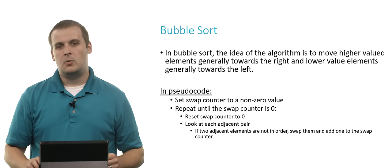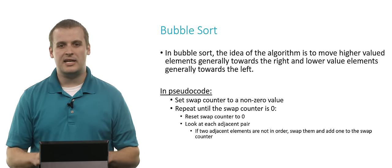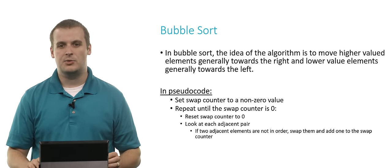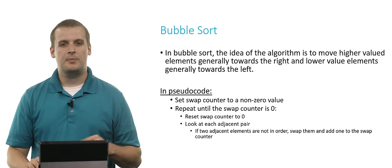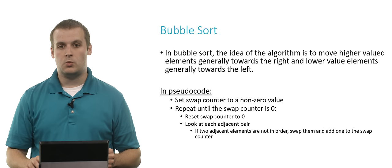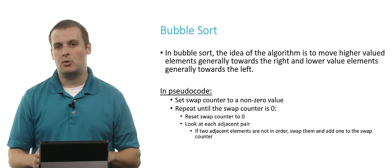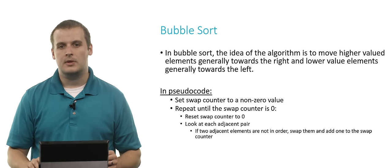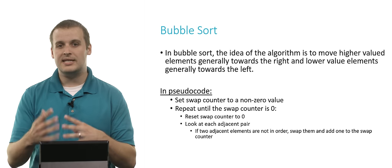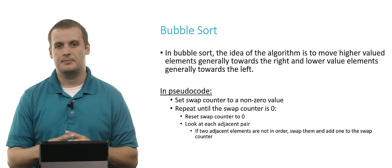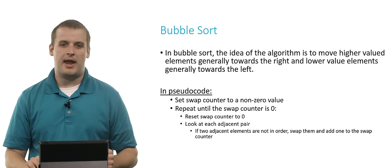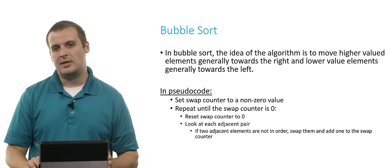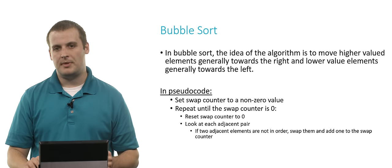How do we do this? Well, in pseudocode, we could say: let's set a swap counter to a non-zero value. Then we repeat the following process until the swap counter is zero, or until we make no swaps at all. Reset the swap counter to zero if it's not already zero, then look at every adjacent pair of elements. If those two elements are not in order, swap them and add one to the swap counter.